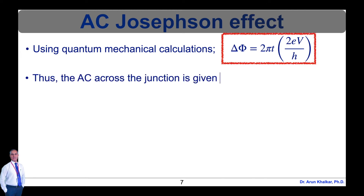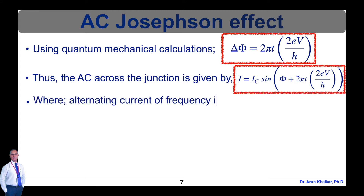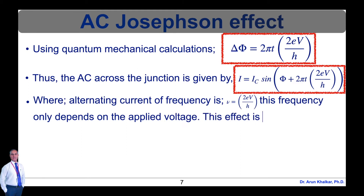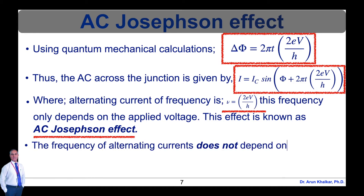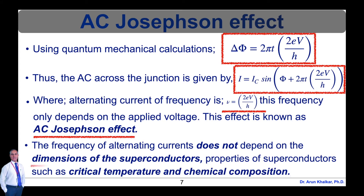Thus, the alternating current across the junction is given by I = Ic·sin(φ + 2πt·(2eV/h)). This current can be represented by an alternating current of frequency ν = 2eV/h. This frequency only depends on the applied voltage and does not depend on the dimensions of the superconductors, nor on properties of superconductors such as critical temperature, chemical composition, etc. At voltage V = 1 volt, AC current of frequency 483.6 MHz is produced. This effect is known as AC Josephson effect.